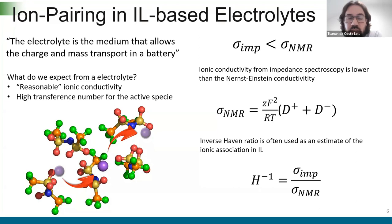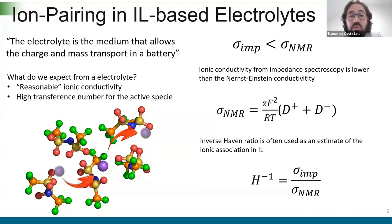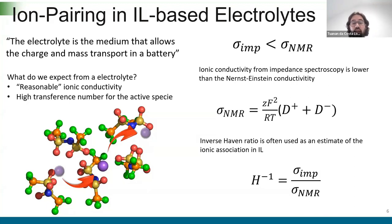If we measure the ionic conductivity of ionic liquids using impedance spectroscopy, we get one value. But if we measure the same property using NMR — the Nernst-Einstein method — we see that the impedance spectroscopy gives a lower value. In general, we assume this lower value is due to strong ion pairing in the system — strong interactions between cation and anion. So if we know how to control ion pairing, we can improve the ionic conductivity and the performance of the electrolyte.